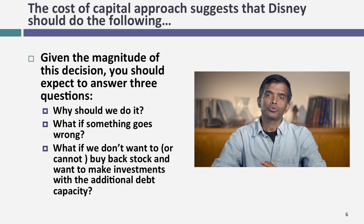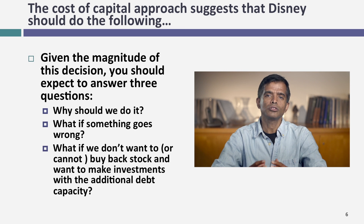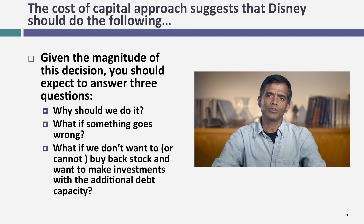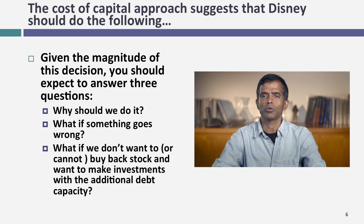There are three basic questions you'll have to address with this recommendation. First, why should we do it? You've got to explain what stockholders in Disney will gain by moving to the optimal. Second, what if something goes wrong? You're borrowing an extra $39 billion — if you have a bad year and earnings drop, you might be in trouble. And third, what if you don't want to buy back stock? Disney has big plans: expanding ESPN, building more theme parks. It seems silly to borrow money and buy back stock when you can use that debt capacity to take projects instead.